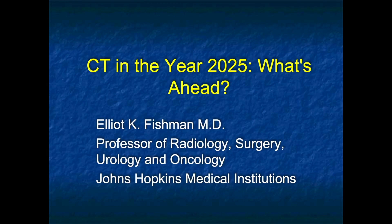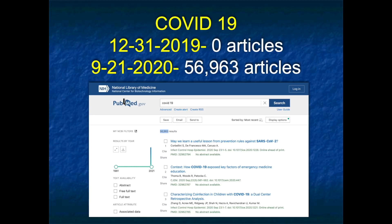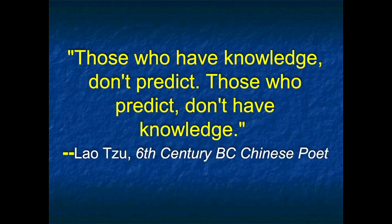This is Elliot Fishman, and let's take a look at CT in the year 2025. You've heard a really impressive amount of information over the last two days, so let's look at where we think things are going. I've given similar talks in the past, but predicting things is not easy — just think COVID-19. On December 31, 2019, there were zero articles published about it. When I looked recently, there were 56,963 articles in PubMed alone, not counting the many computer science articles outside of PubMed. So predicting is very dangerous.